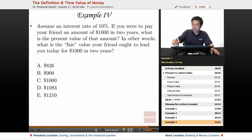Here's an example with present value. If you have a calculator, it's great, but you can actually figure this out without doing the hard calculations. Assume an interest rate of 10%. If you were to pay your friend an amount of $1000 in two years, what is the present value of that amount?